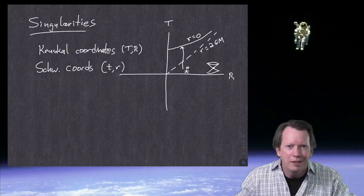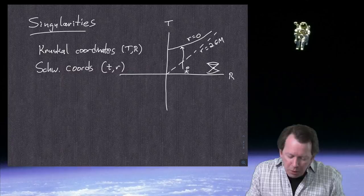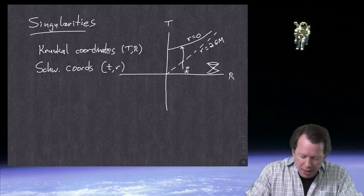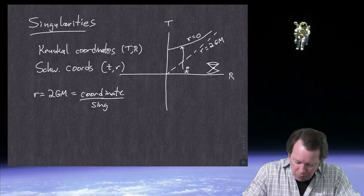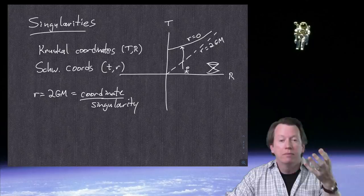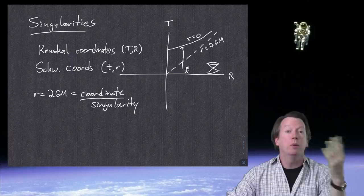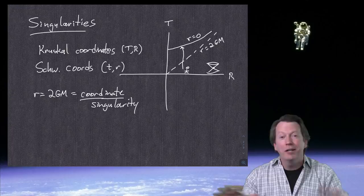Both R = 0 and R = 2GM are singularities, but in very different senses. R = 2GM, where the event horizon is, is a coordinate singularity — you have simply chosen bad coordinates. Certain components of the metric blow up or go to zero in Schwarzschild coordinates. When you have a coordinate singularity, it's okay to worry, but it's not at all clear that anything physically important is happening. You may just have chosen bad coordinates — this is something even Einstein really struggled with for years.